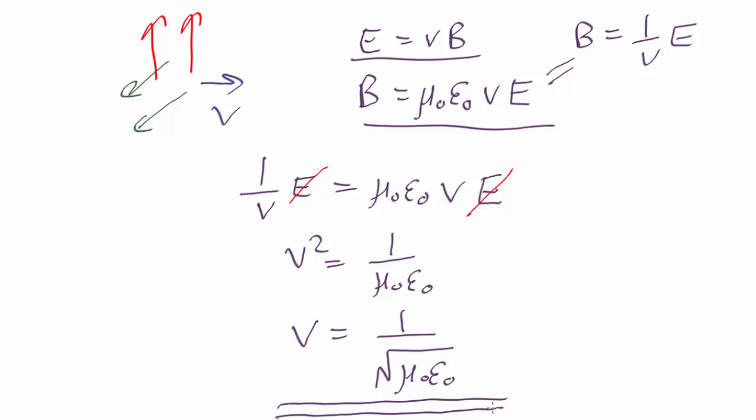This was pretty amazing when Maxwell came up with it. And it was more amazing still when he plugged in the numbers. When you actually look up the numbers for μ₀ and ε₀, which are both things you can measure experimentally, it comes out as 3×10⁸ meters per second. An extremely familiar number, the speed of light.